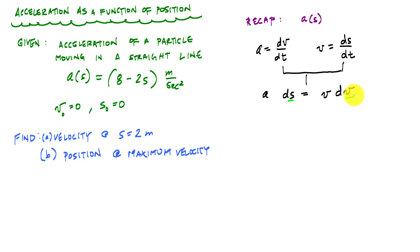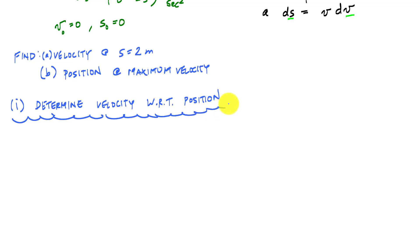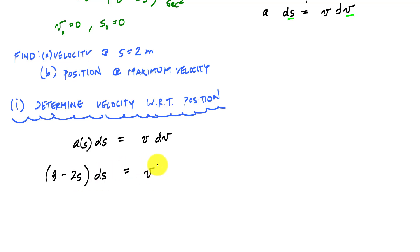This gives us a sense of how to relate velocity to position. The first question — velocity at s equals 2 meters — is really asking us to relate velocity and position together using the relationship a ds = v dv. We substitute the acceleration function, giving us (8 minus 2s) ds equals v dv.